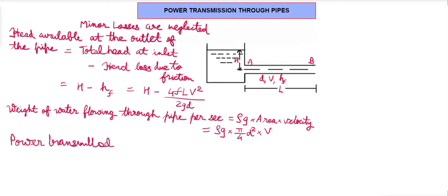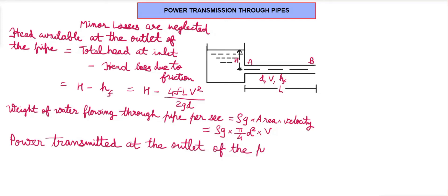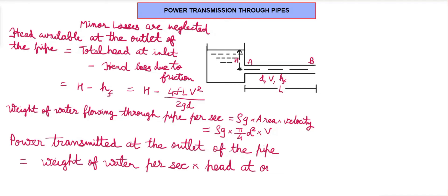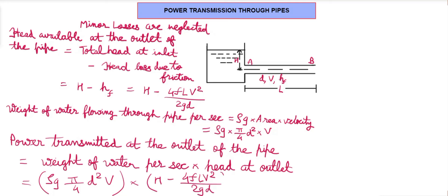The power transmitted at the outlet of the pipe equals the weight of water per second multiplied by the head at the outlet. Substituting, this is ρg·(π/4)D²·V·(H − 4FLV²/2GD), giving the result in watts. To get kilowatts, divide this equation by 1000: P = (ρg/1000)·(π/4)D²·V·(H − 4FLV²/2GD).